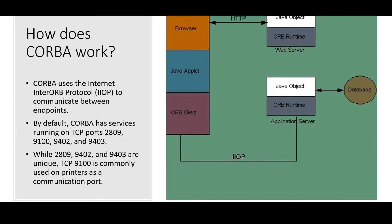How does CORBA work? CORBA uses Internet Inter-Orb Protocol, or IIOP, to communicate between endpoints. By default, CORBA has services running on TCP ports 2809, 9100, 9402, and 9403. While 2809, 9402, and 9403 are unique, TCP 9100 is commonly used on printers as a communication port.